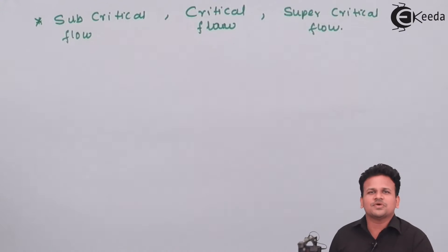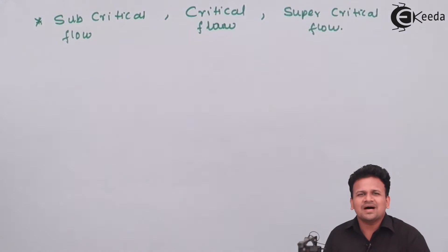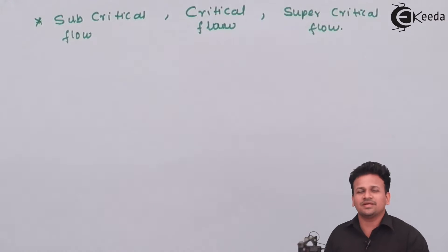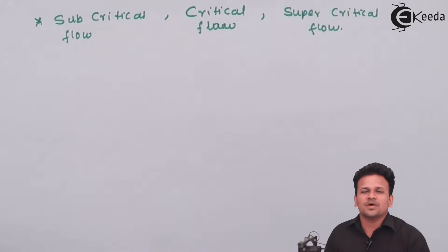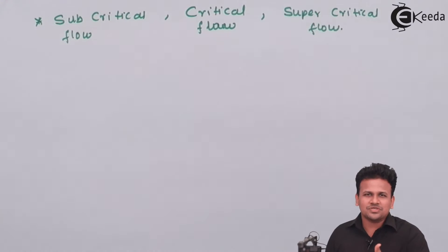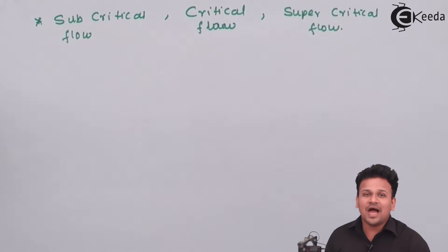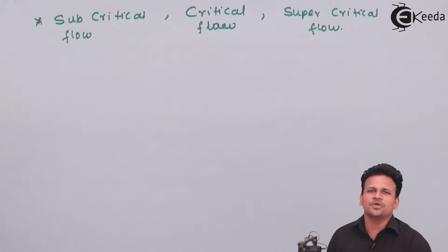To study subcritical flow, critical flow, and supercritical flow, we have to define a dimensionless number. These three flows are similar to flows we have already studied using the Mach number. The Mach number is the ratio of velocity of the fluid to the velocity of sound, and it differentiates between sonic, subsonic, and supersonic velocity. Similarly, we define a dimensionless number called the Froude number.